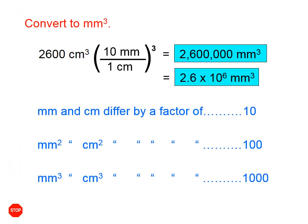From this example, millimeters and centimeters differ by a factor of 10. Square millimeters and square centimeters differ by a factor of 10 times 10, which is 100. And cubic millimeters and cubic centimeters differ by a factor of 10 times 10 times 10, which is 1000.